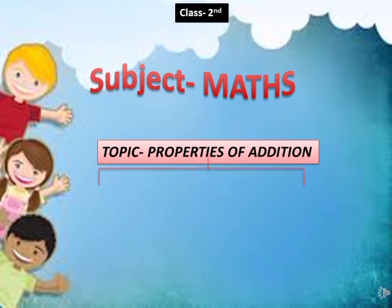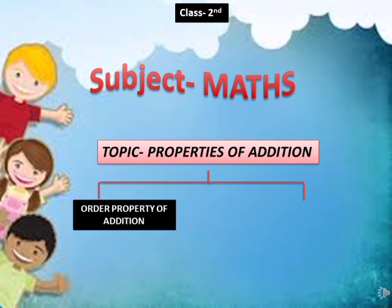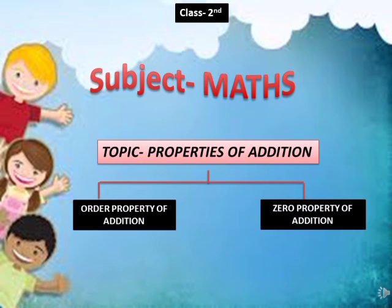There are two properties of addition. First, order property of addition. Second, zero property of addition.